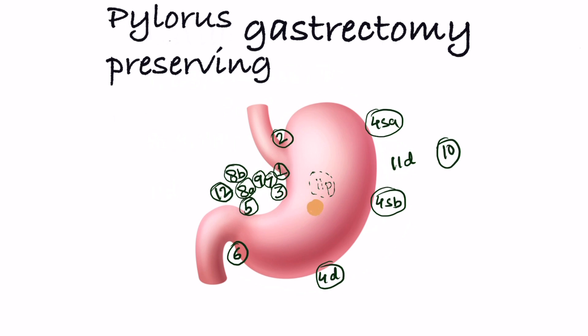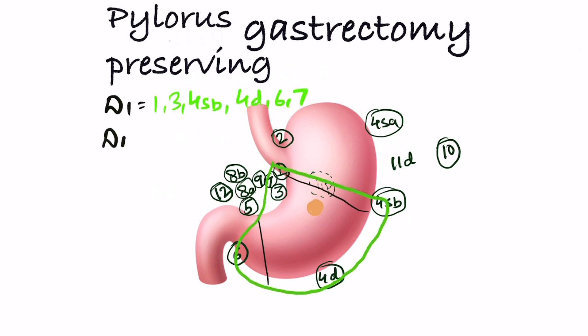In the case of a small tumor in the middle of the stomach where pylorus-preserving gastrectomy is done, D1 is stations 1, 3, 4SB, 4D, 6, and 7. Stations 4SA and 2 are far. D1 plus is D1 with stations 8A and 9.